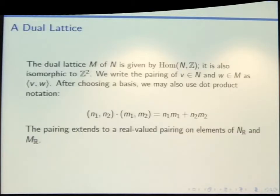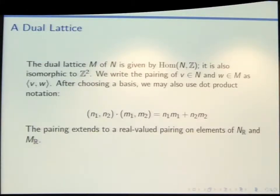We made a polygon. But we really want to have two polygons, so we need another place to draw another polygon. We'll just take the dual lattice, which is also another copy of Z-squared, and then we get another plane in which our dual lattice lives. There's a natural pairing, because it is a dual lattice, between points in the plane we started with and points in our new plane.